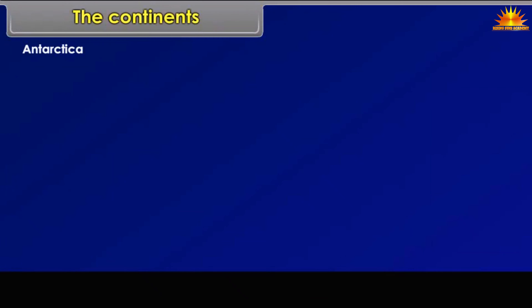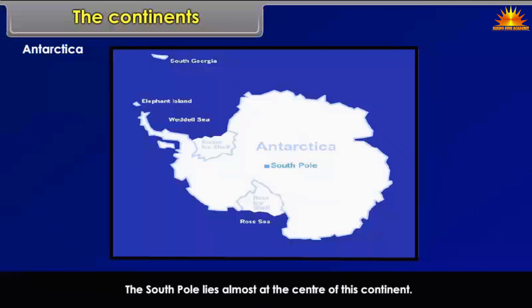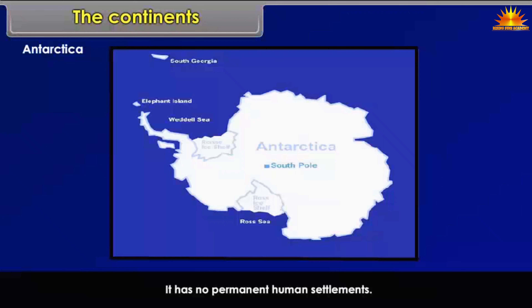Antarctica is completely in the southern hemisphere. It is a continent larger than Europe and Australia put together. The South Pole lies almost at the centre of this continent; hence the continent is permanently covered with thick ice sheets. It has no permanent human settlements.